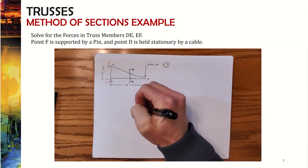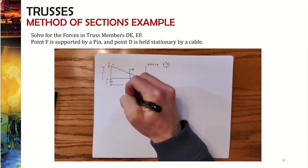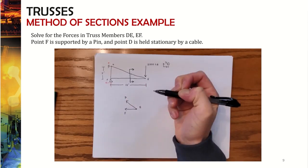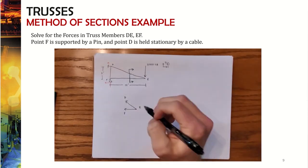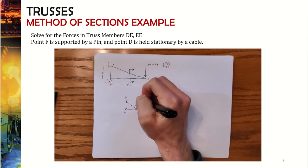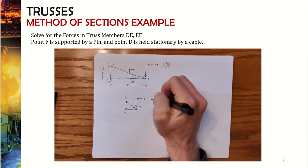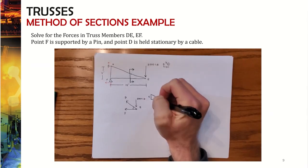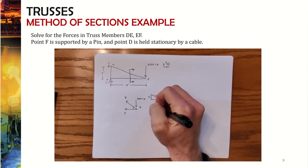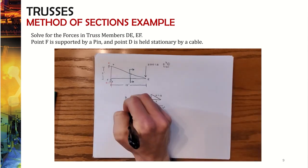After making the section cut and looking to the right, we can see members DE and FE along with the applied load of 2,000 pounds pushing down in the vertical Y direction. To understand the angle, we use similar triangles. With the larger triangle being 5 feet tall and 12 feet at the base, the hypotenuse x equals the square root of 5² + 12² = 13. We have a 5-12-13 triangle.